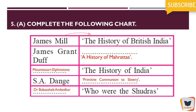James Grant Duff has written a history of the Marathas. Who has written a history of India? You have to write Mount Stewart Elphinstone. Then, Asad Ange — who has written 'Primitive Communism to Slavery' and 'Who Were the Shudras'? It was written by Dr. Babasaheb Ambedkar.